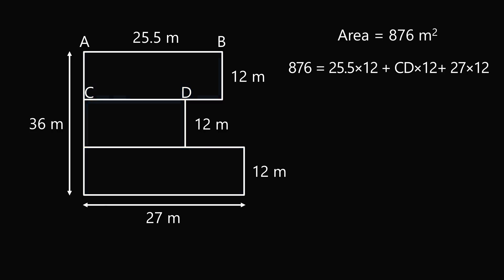This means that 876 is equal to 306 plus CD times 12 plus 324, that means 246 is equal to CD times 12, so CD is equal to 20.5.